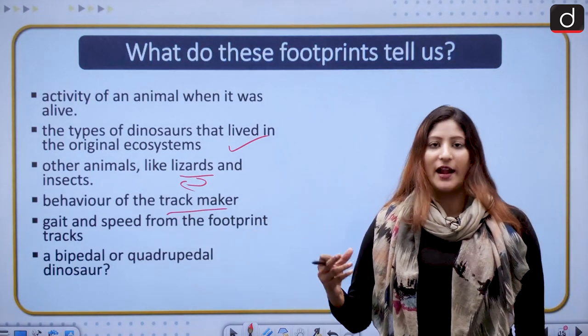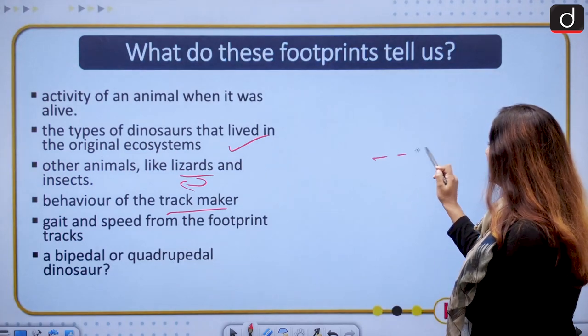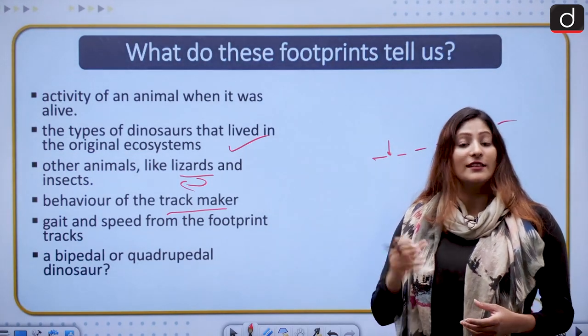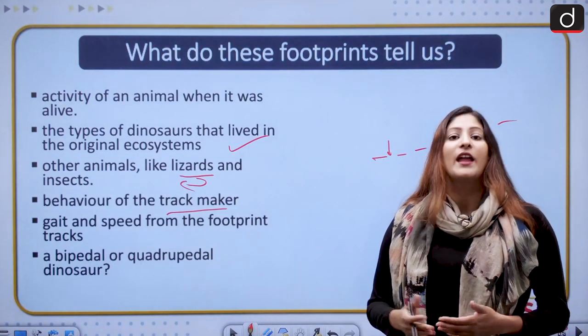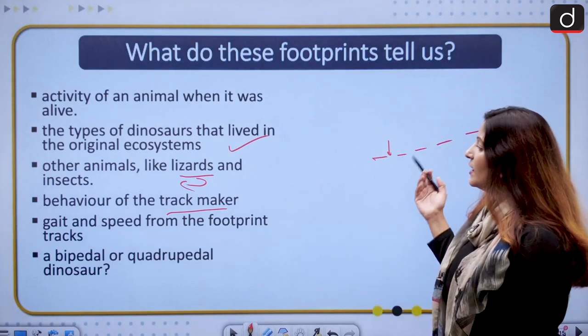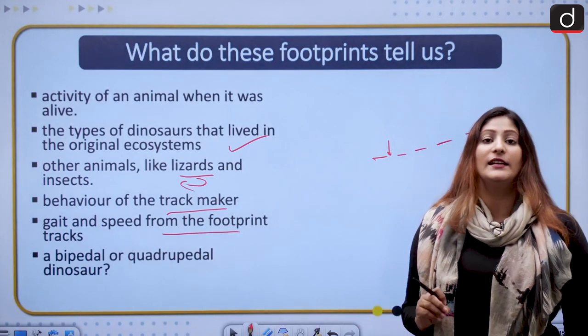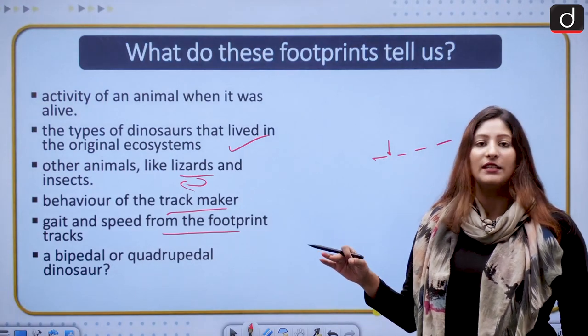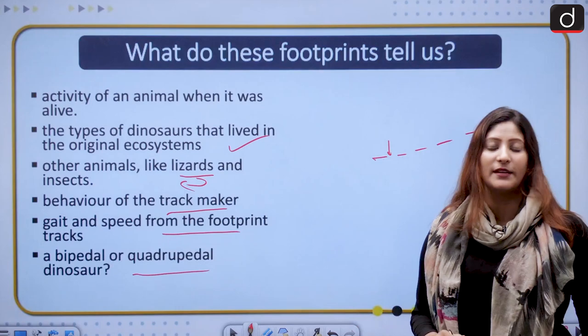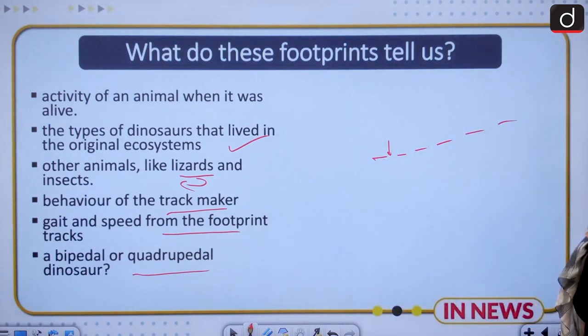They reveal the behavior of the track maker—the animal making the track. If shorter footprints are seen, where the distance between two footprints is not very spacious, then the dinosaur is running. If larger spaces are there, then the dinosaur is walking. This shows behavior, gait, and speed. Also, whether it was a bipedal or quadrupedal dinosaur—walking on two feet or four feet respectively.